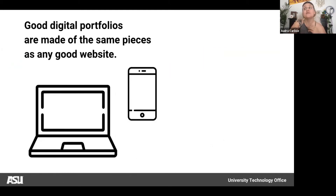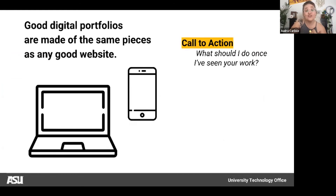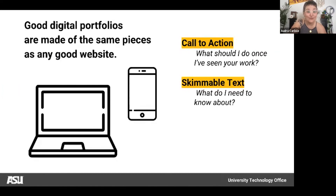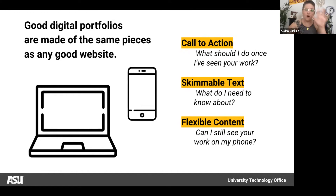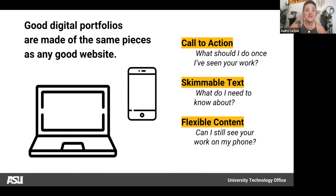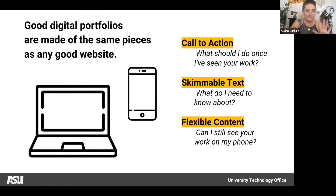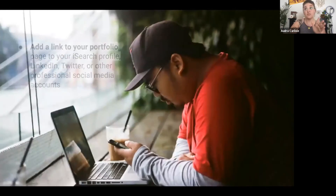Good digital portfolios are made of the same pieces as any good website: a call to action — what should someone do after seeing your work; skimmable text — what do they actually need to know; and flexible content — it should still work when viewed on a phone. The beautiful thing about Spark is that all of these functions are easy to incorporate, and everything looks great on mobile or exported as a printable PDF.